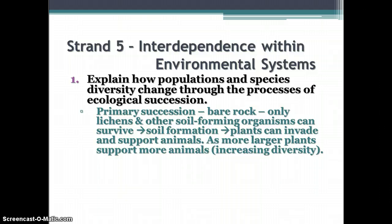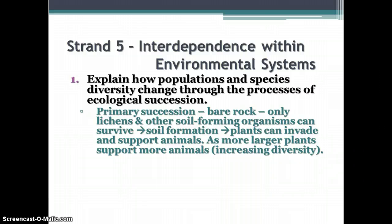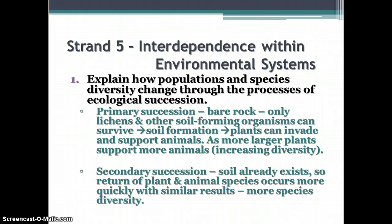Usually only lichens and other soil-forming organisms can survive on bare rock, but they help produce soil through wave action, weathering, and organism activity. As soil forms, plants can invade and start growing, which then supports animals. As larger plants support more animals, diversity of the ecosystem increases. Secondary succession begins where soil already exists, so the return of plant and animal species occurs more quickly, with similar results — more species diversity — as the ecosystem moves toward a climax community, which is the ultimate sustainable community that can develop.